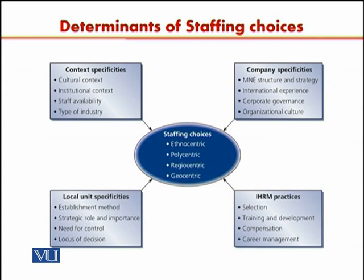How much need for control is there? This depends on the type of industry, the culture of your host country, the experience of your organization, and how long the company has operated in a particular culture. If the need for control is high, you need to go for an ethnocentric approach; if it is low, you can go for a polycentric approach; and if the need for control is for integration, you would go for a geocentric or regiocentric approach. And finally, the locus of decision making — if decision making is centralized, you have to go for an ethnocentric approach rather than polycentric.